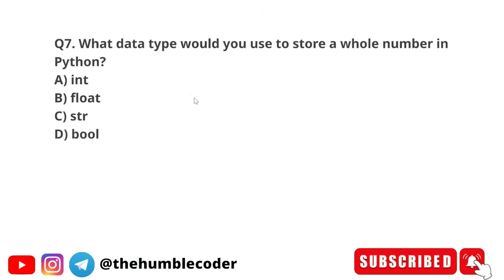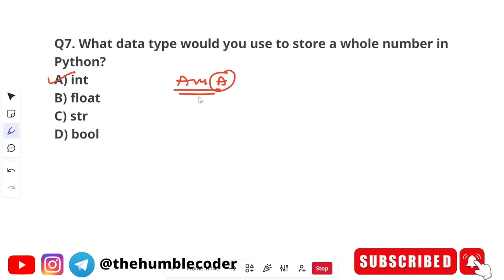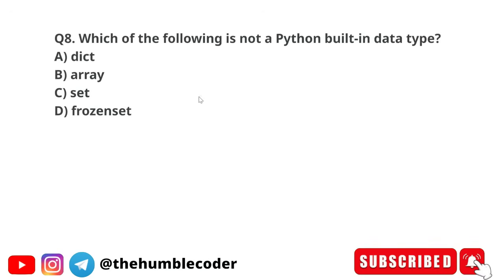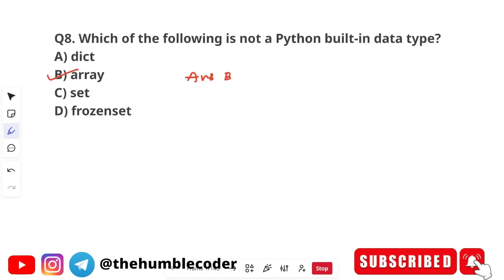Question 7: What data type would you use to store a whole number in Python? Options are int, float, string, and boolean. The correct answer is int — option A. Question 8: Which of the following is not a Python built-in data type? Options are dict, array, set, and frozenset. The correct answer is option B — array. While dict, set, and frozenset are built-in data types, array is not built-in but can be used with an imported module.